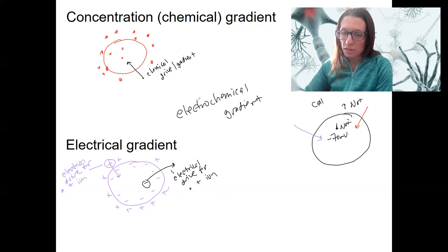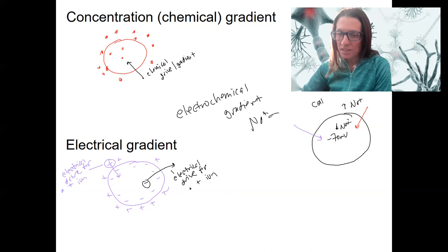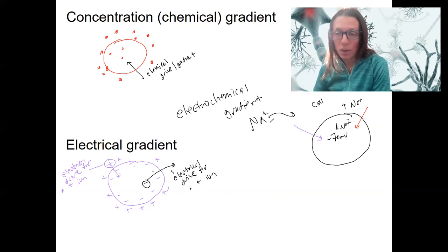Sometimes this is easy to determine because the electrical and the chemical gradient are in the same direction. So for sodium in this case, the electrochemical gradient is simple to determine. It is the same direction for both. There are other times when the electrical and the chemical gradients act in opposition.